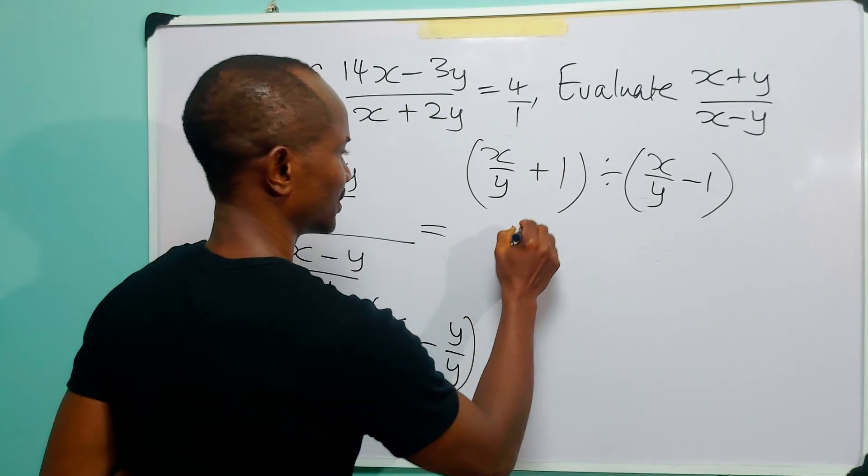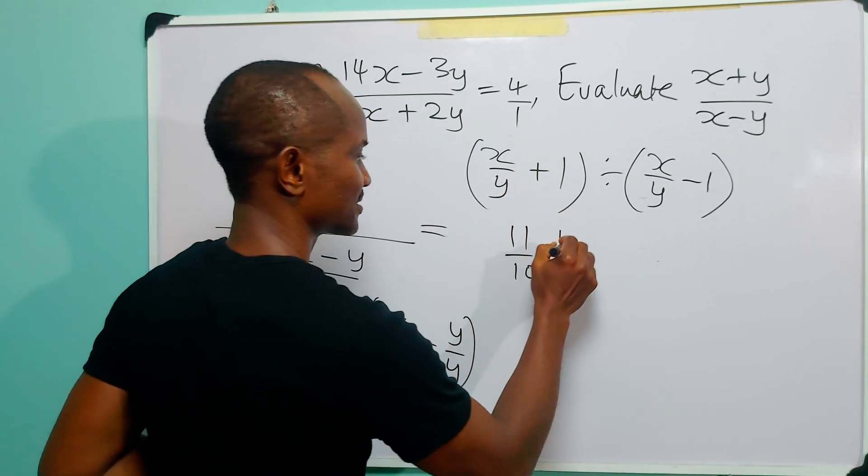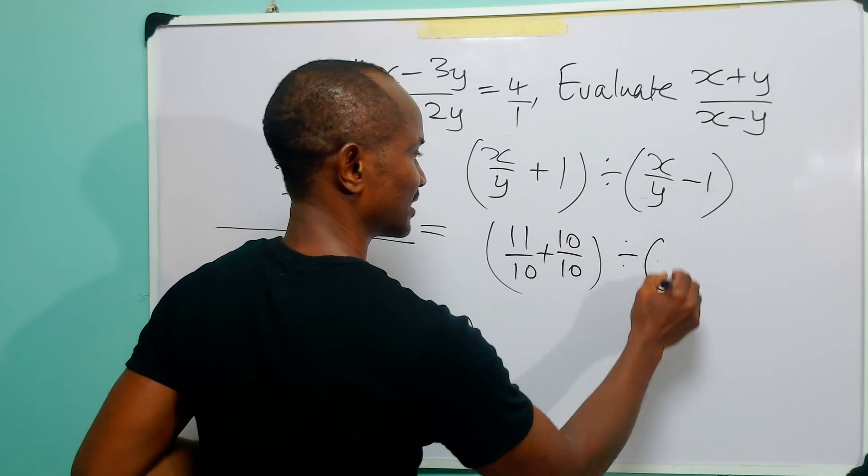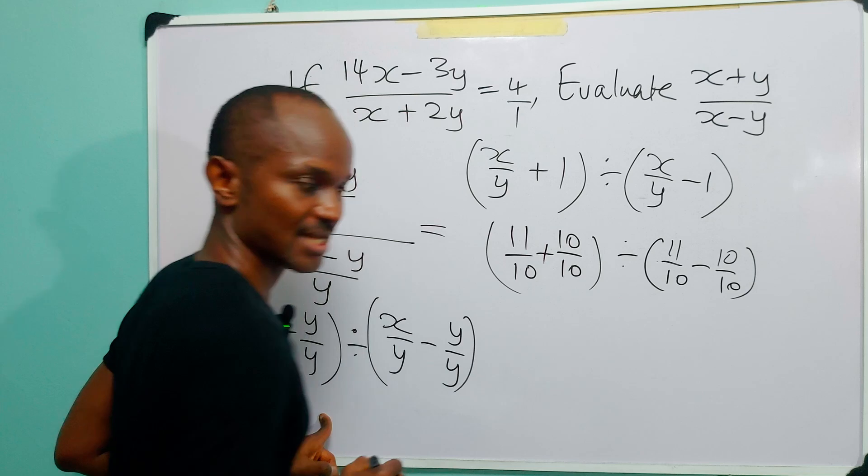So we have 11/10 plus—now 1 can be expressed as 10/10—divided by 11/10 minus 10/10.